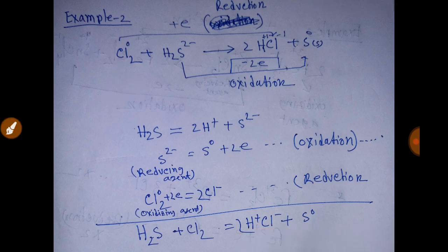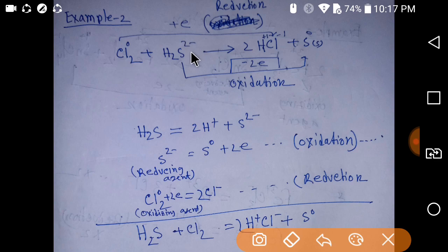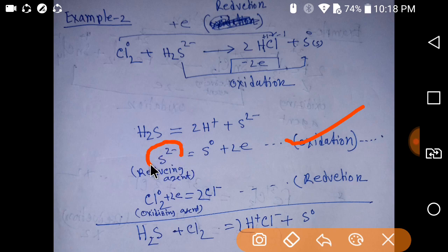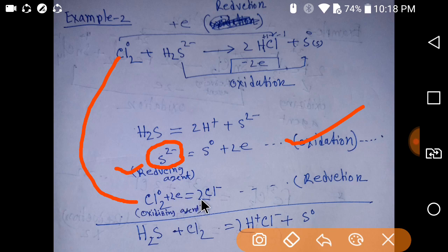Sulfide is losing electrons, which is why it is the reducing agent. We can write hydrogen sulfide as 2H⁺ plus sulfide; this sulfide will lose electrons and become sulfur. Since electrons are lost, this is an oxidation process, and sulfide is the reducing agent. Chlorine is taking two electrons, so it is the oxidizing agent, and since electrons are gained this is a reduction process.